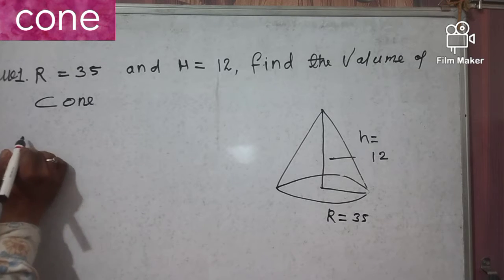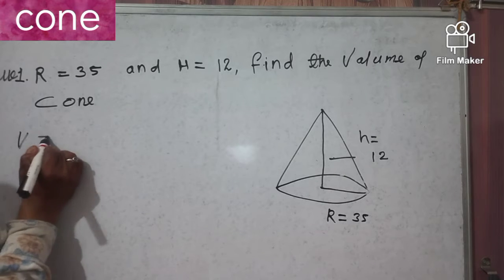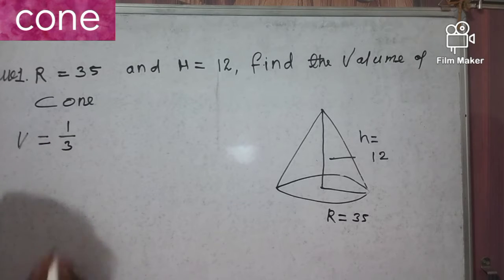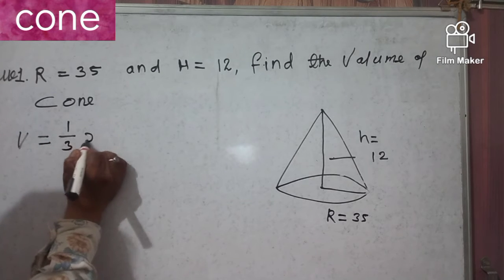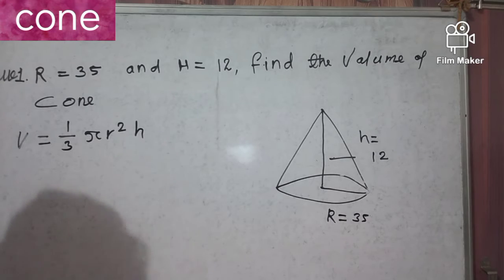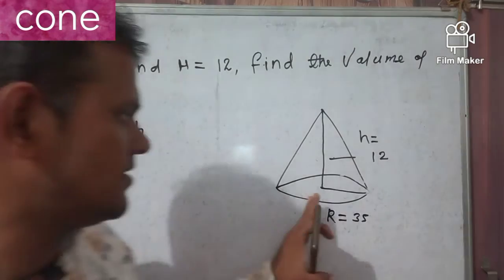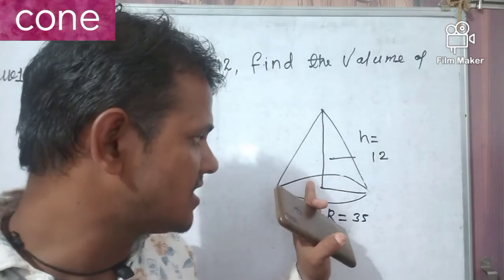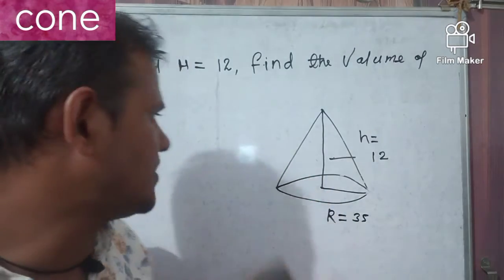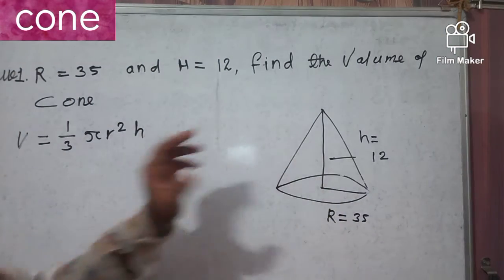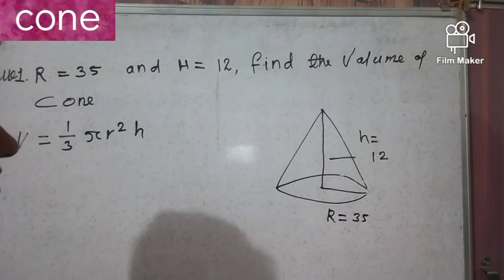The volume of a cone is equal to one-third times pi times r squared times h. Pi r squared is the area of a circle, and we multiply by the height and one-third.